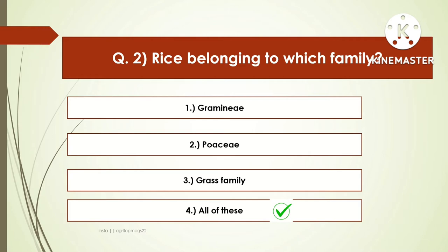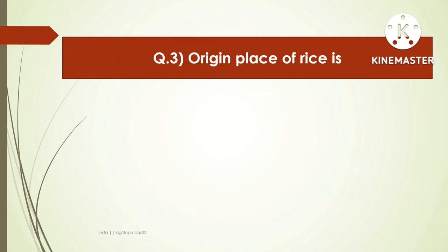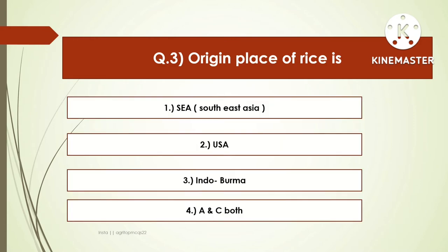The next question is: the origin place of rice is — options are Southeast Asia, USA, Indo-Burma, or A and C both. The right answer is A and C both. The origin place of rice is Southeast Asia and Indo-Burma.